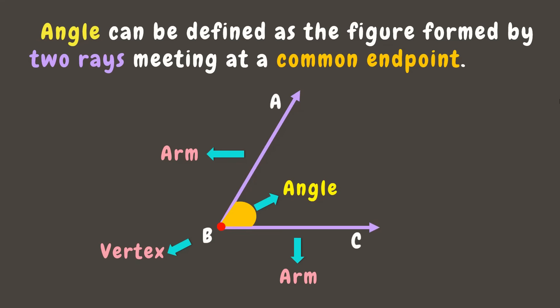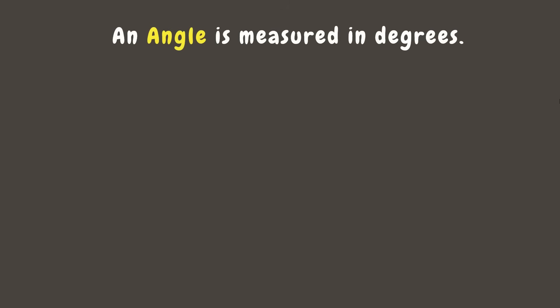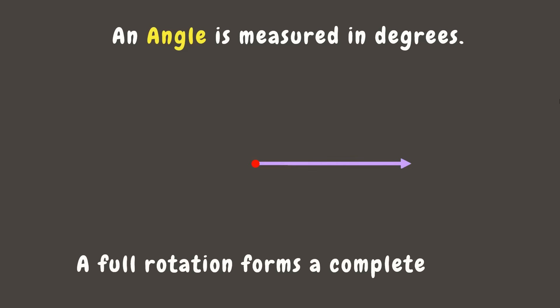The common endpoint where two rays meet is called the vertex. An angle is named using the points on its arms. We can name this angle as angle ABC, or angle CBA, or simply name it using its vertex as angle B. Now, an angle is measured in degrees, and a full rotation forms a complete 360 degrees.